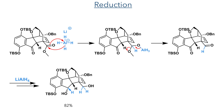With the framework complete, they then had to install the correct pendant groups. The compound was first reacted with lithium aluminium hydride, which adds a hydride to the carbonyl centre, forming a tetrahedral aluminium alkoxide species that collapses to generate an aldehyde. Further reaction with LiAlH₄ reduces this down to a primary alcohol, in addition to reduction of the ketone.